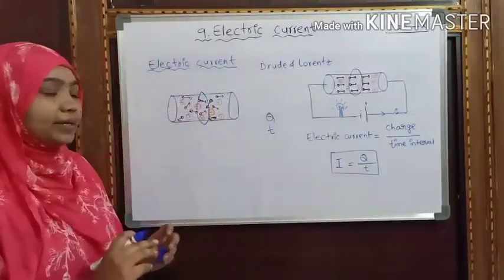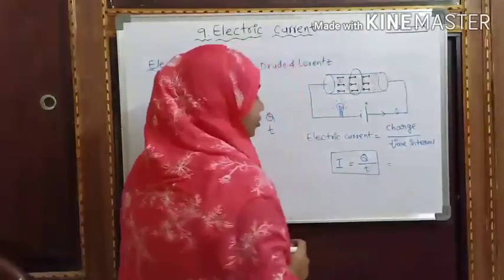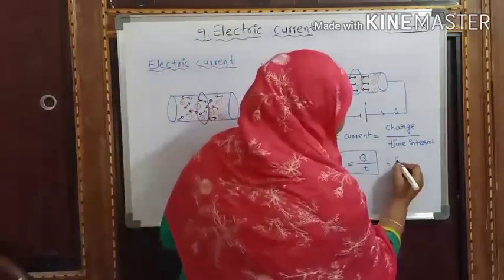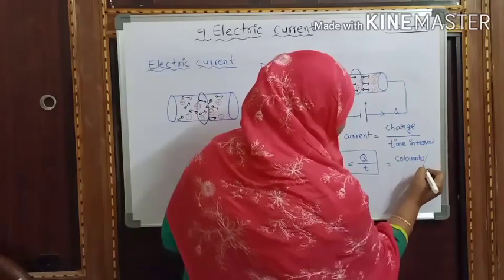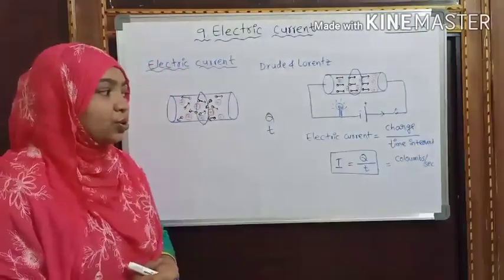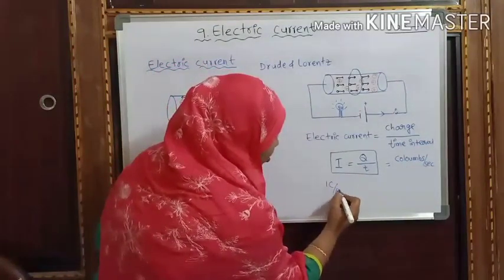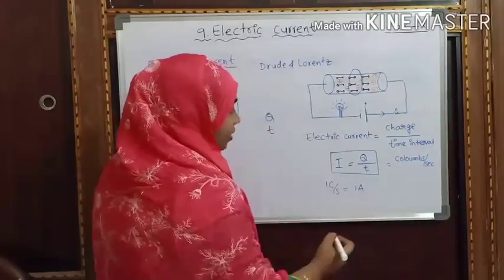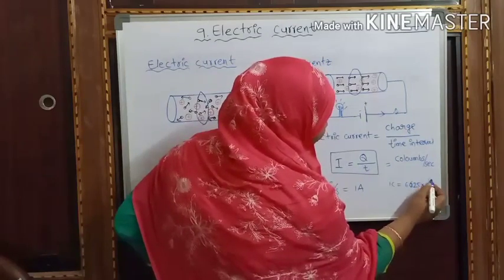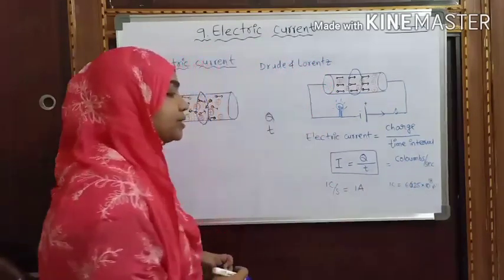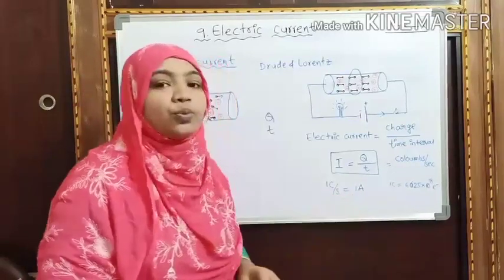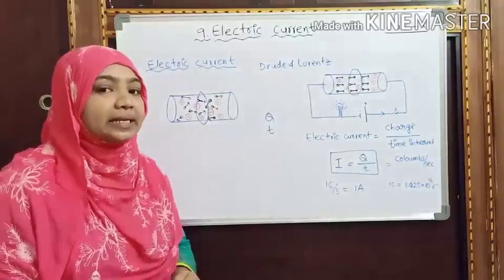Let us write the units of electric current. q is charge, and charge is always measured in coulombs. So the units of electric current are coulombs per second. One coulomb per second is always equal to one ampere. One coulomb is equal to 6.625 × 10¹⁸ electrons. Ampere is the SI unit of electric current.